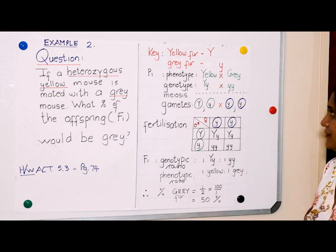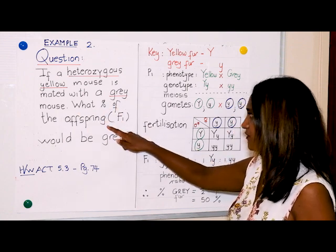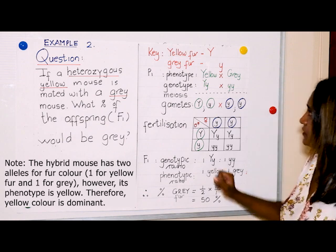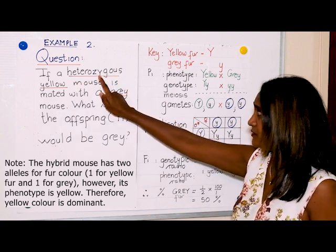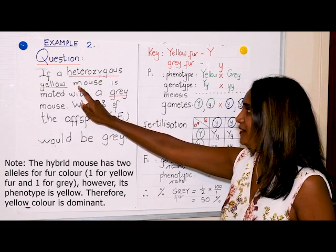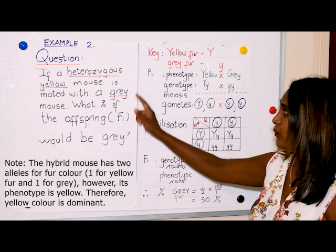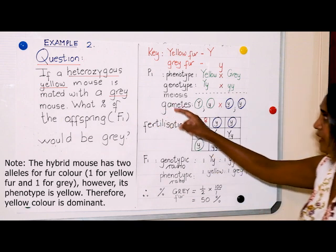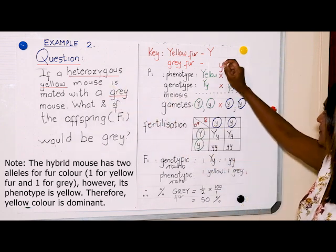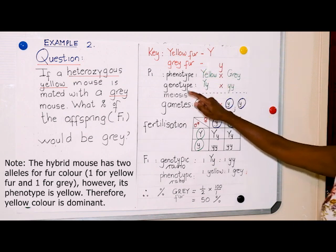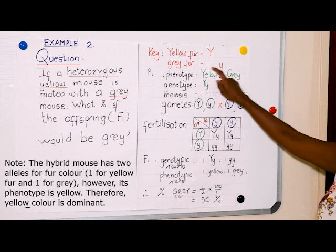Another example: if a heterozygous yellow mouse is mated with a grey mouse, what percentage of the offspring or F1 would be grey? Since this mouse is yellow but heterozygous, it has two alleles for fur colour — one allele for yellow fur and one allele for grey fur. Since only one characteristic is being mentioned, it is a monohybrid cross. For the key: the allele coding for yellow fur is dominant — capital Y for yellow fur — and since grey fur colour is recessive, small letter y represents the allele coding for grey fur.